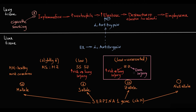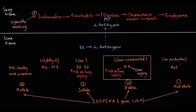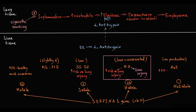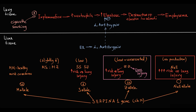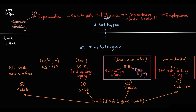Another possibility is the null phenotype — the most rare variant, resulting in no antitrypsin protein production at all. Patients with this variant are at huge risk of the most severe lung injury. However, because there is no antitrypsin protein produced at all, there is no risk of polymerization and thereby no possibility of liver injury. Liver injury is a unique feature of the ZZ variant.